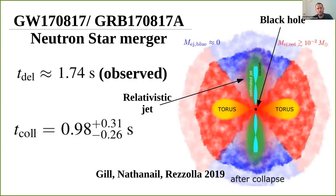In this specific case—the first binary neutron star merger—there was a delay of 1.74 seconds from the gravitational wave merger point to the first gamma-ray observation. We analyzed this and found that for this to happen, the hypermassive neutron star must collapse in around one second. You need time for it to eject the matter we saw in the kilonova, and also time for the jet to drill through the ejecta before we can see it as the gamma-ray burst.